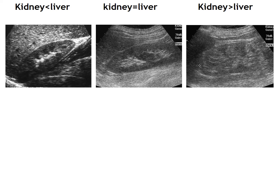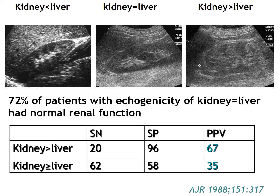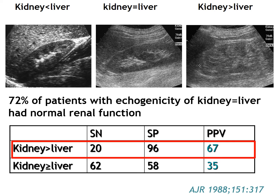Looking at grayscale ultrasound images of three different kidneys: the first has renal cortical echo lower than liver echo, the second has the same echogenicity as liver, and the third has cortical echo higher than liver echo. The left side is clearly normal, the right side is clearly abnormal, but the middle image is difficult to classify. An important paper demonstrates that we should consider renal cortical echo abnormal only when it is higher than liver echo, since this criterion yields higher specificity and higher positive predictive value.